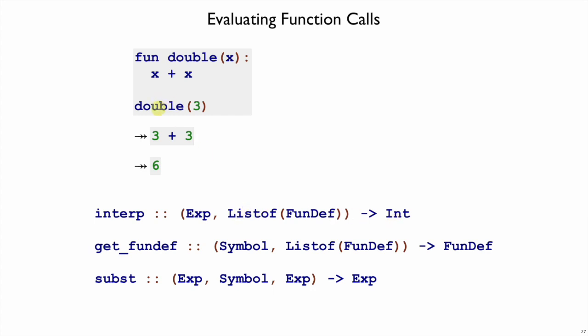When we call a function like double, we need to go find it in our list of function definitions. So that's going to be a helper function, get_fundef, which will take the name of a function and a list of all our definitions, and it'll find the right definition for us.